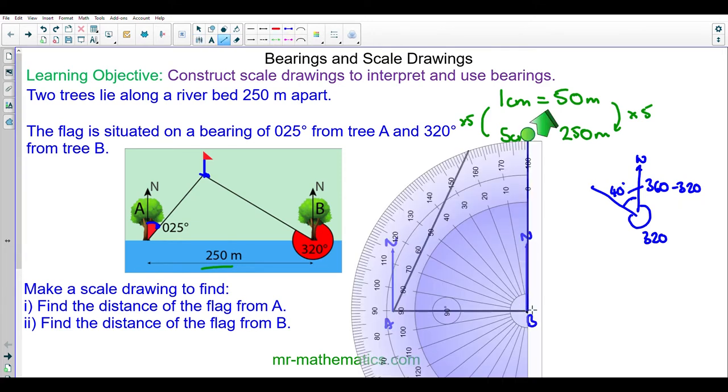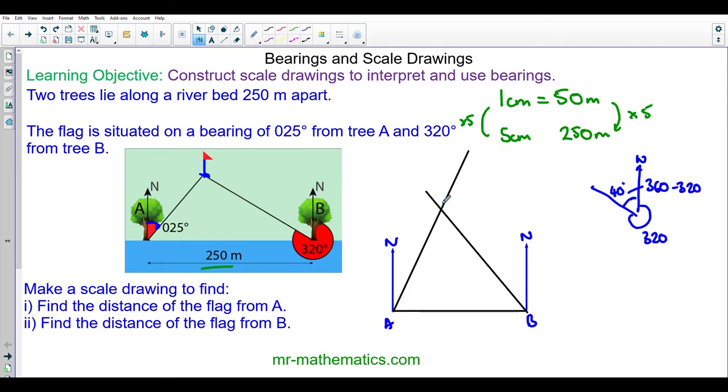I'm drawing a 40 degree angle anti-clockwise from the north line and you can see the two lines will intersect. This is where our flag will go. We can show our flag at this point here.